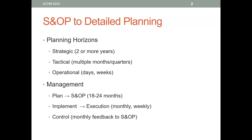The S&OP tells you what you're going to do this month, next month, the following month, etc. But you need to break down these monthly plans into weekly and daily schedules — what are you going to do today, tomorrow, this week, next week, etc.